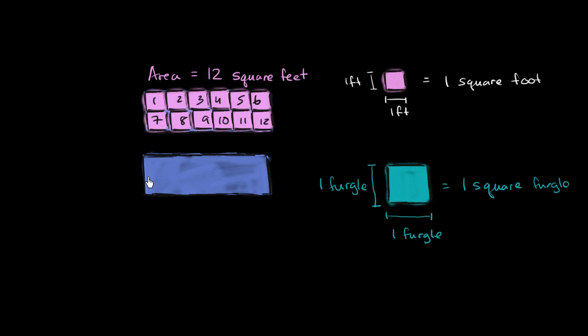So let's see how many square fergals is this area, that same area that is twelve square feet. Let me copy and paste this. So we can get one square fergal on there, another square fergal on there, and a third square fergal on there. So we get one, two, three square fergals. The area of this figure in square fergals is equal to three square fergals.